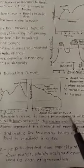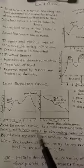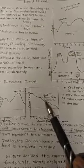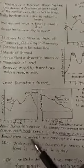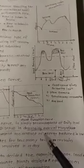The load duration curve is simply a rearrangement of a daily load curve with load setup in descending order of magnitude. That is the load duration curve. Equal area represents amount of energy produced in kilowatt hours.